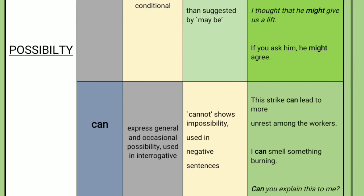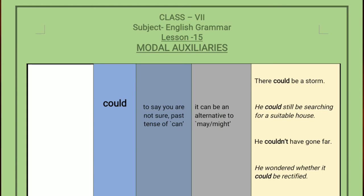Can expresses general and occasional possibility and is used mostly in interrogative sentences — sentences used for asking questions. Cannot expresses impossibility. The last modal for possibility is could, which is used when you are not so sure about something. Could is the past tense of can and can be an alternative to may or might. Example: 'There could be a storm' — the storm may or may not happen.